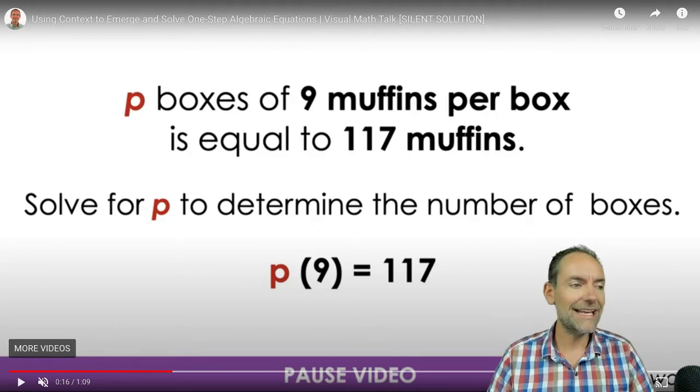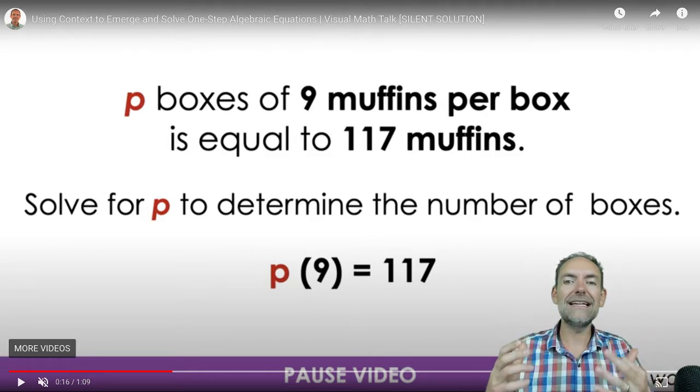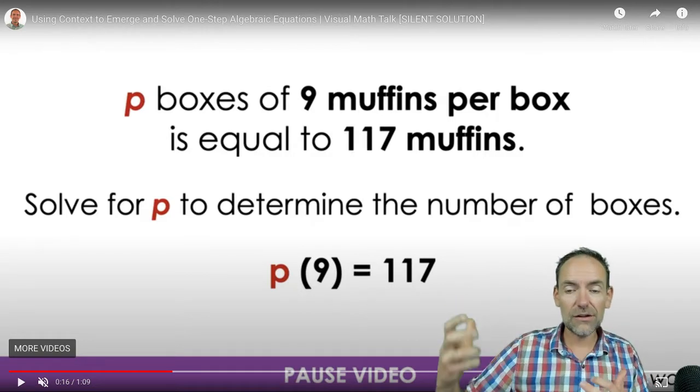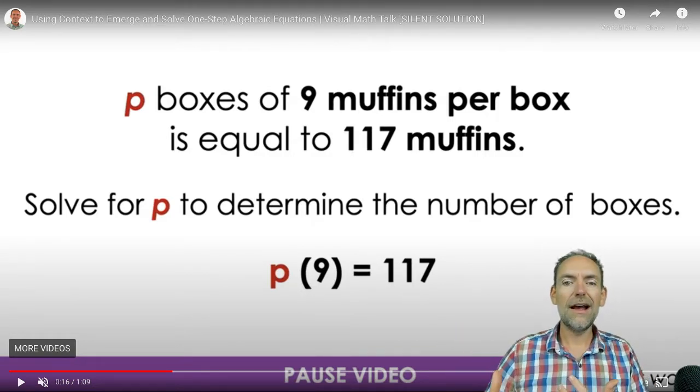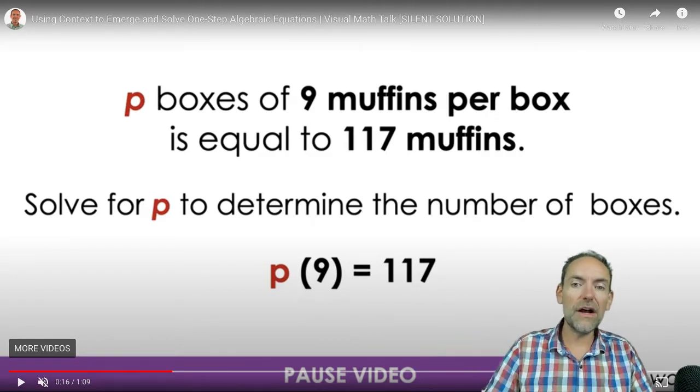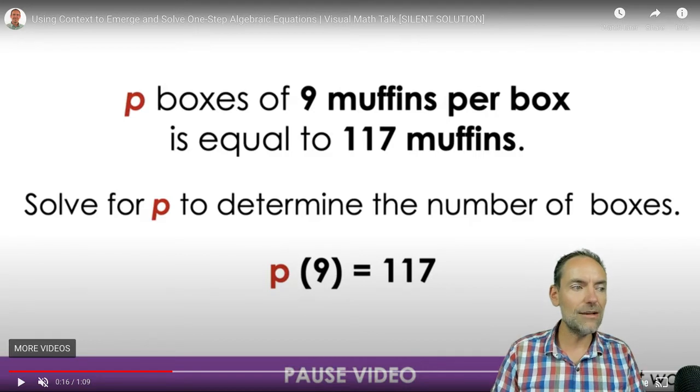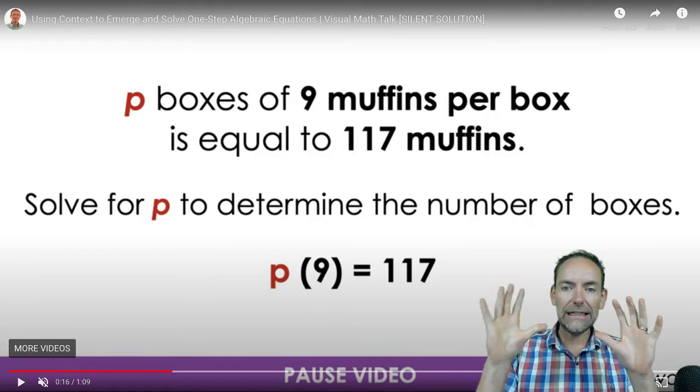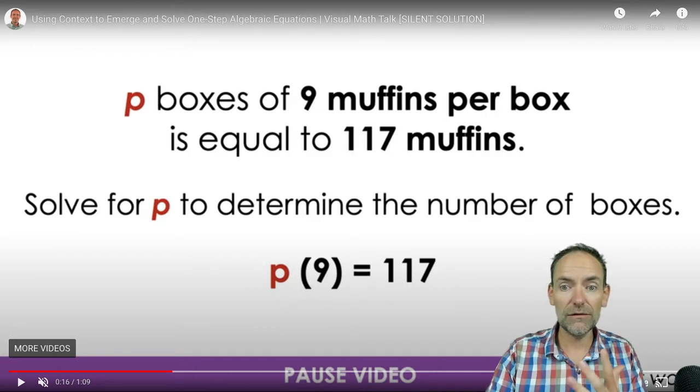Usually the coefficient goes in front of the variable. However, we're intentionally placing it here because we actually want to stay consistent with this idea of the first number or the first factor in a multiplication sentence. We typically call the groups. We say how many groups of a certain quota. So here we're sort of suggesting that P represents the groups. In this case, the boxes. We want to make a clear connection here.